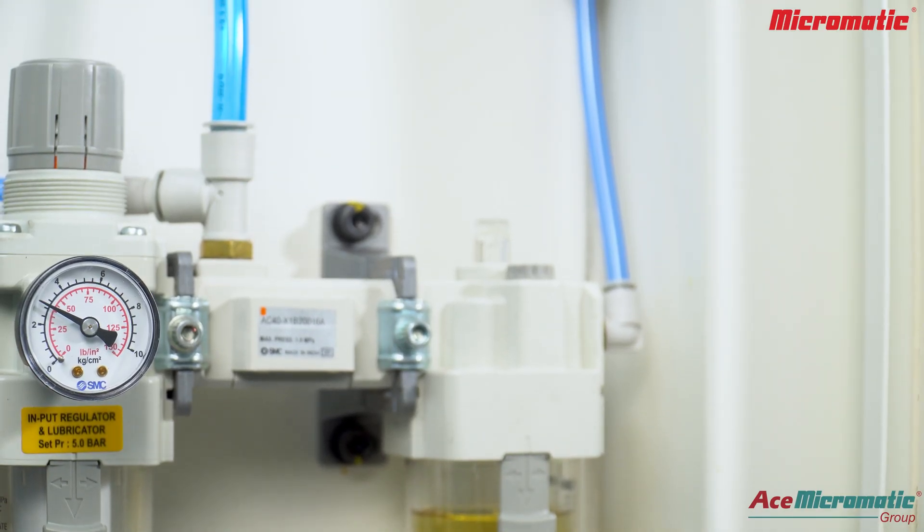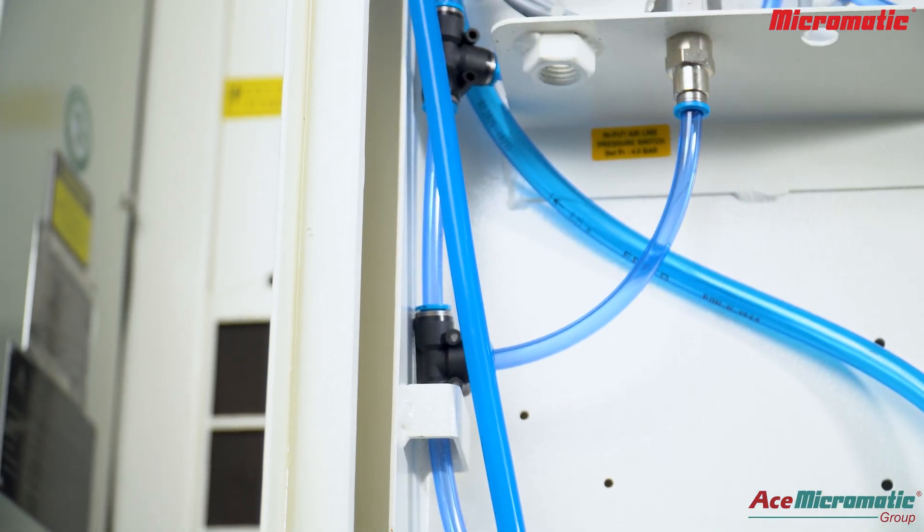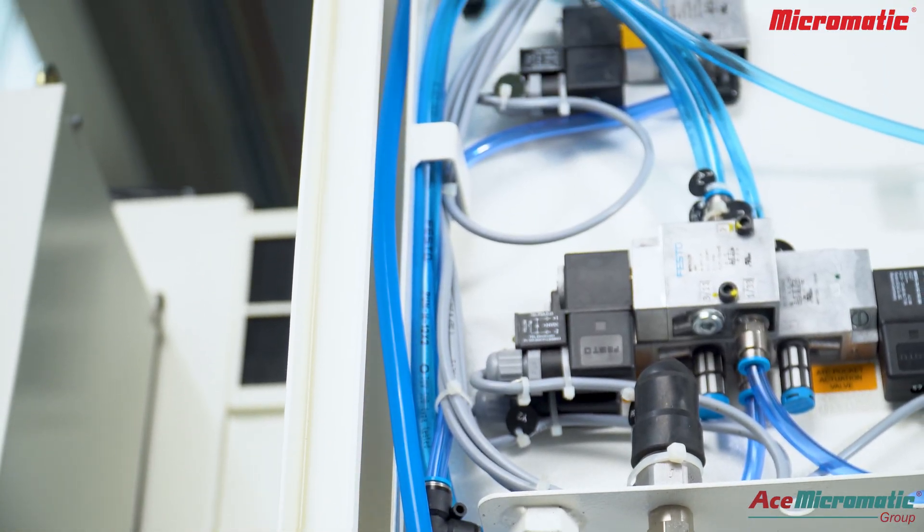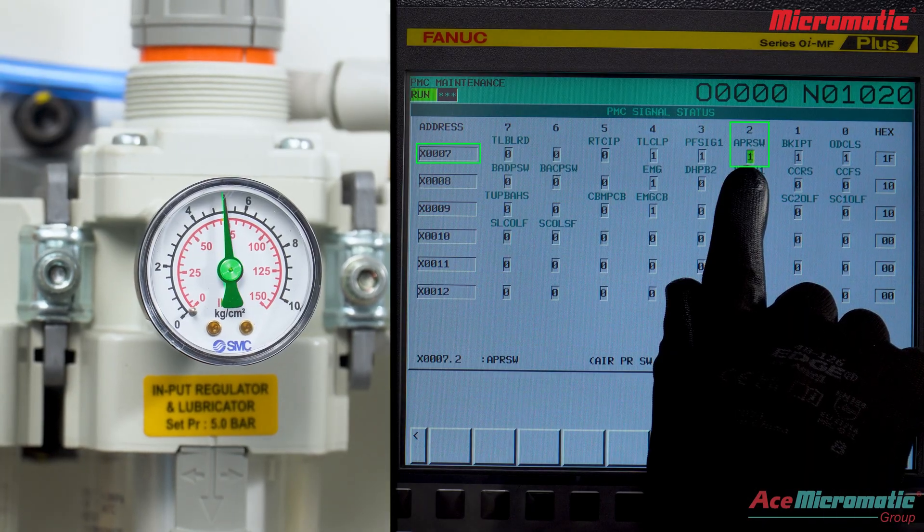Check hose connections and any leakage in the incoming line. Now you can see pressure is restored and X7.2 becomes 1.